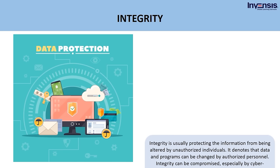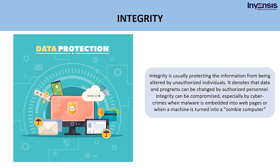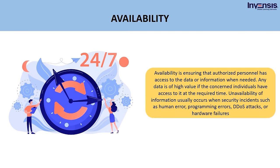The second component is integrity — protecting information from being altered by unauthorized individuals. It denotes that data and programs can be changed only by authorized personnel. Integrity can be compromised, especially by cyber crimes when malware is embedded into web pages or when a machine is turned into a zombie computer. The third component is availability — ensuring that authorized personnel has access to data or information when needed. Unavailability of information usually occurs during security incidents such as human error, programming errors, DDoS attacks, or hardware failures.